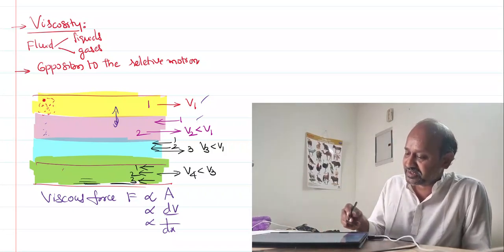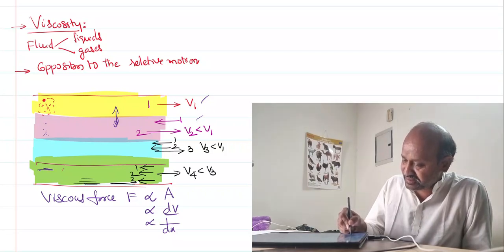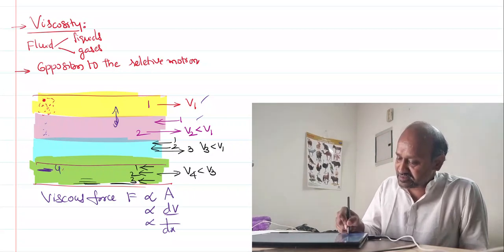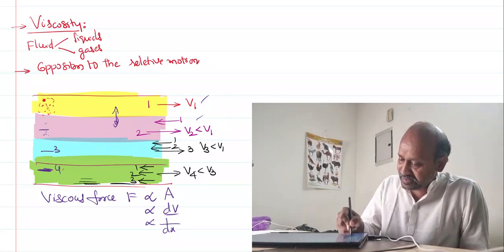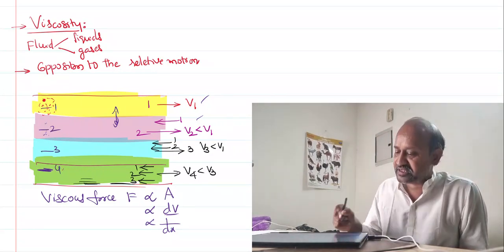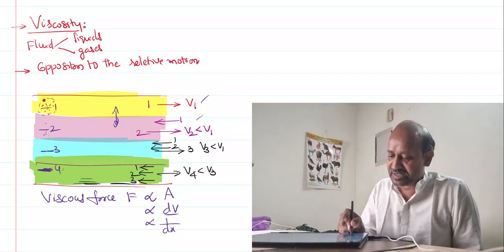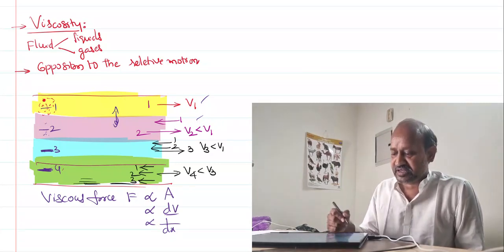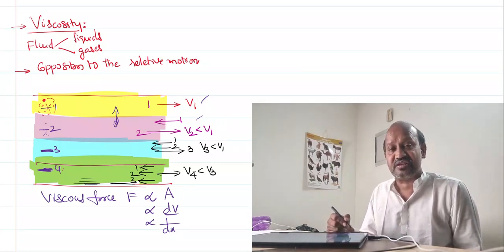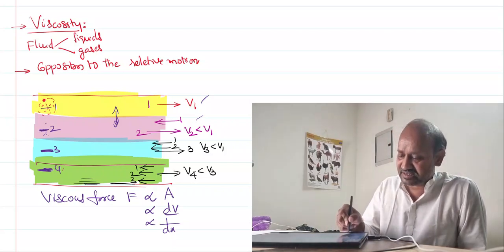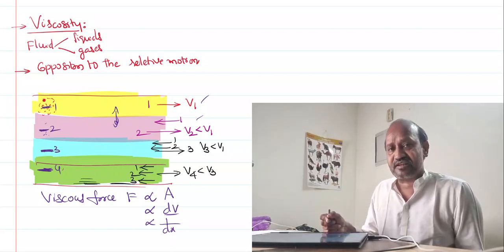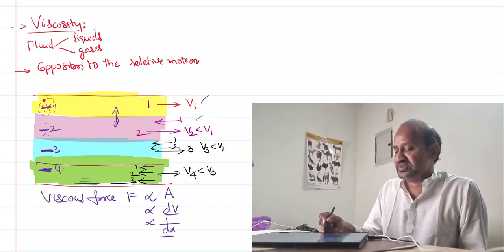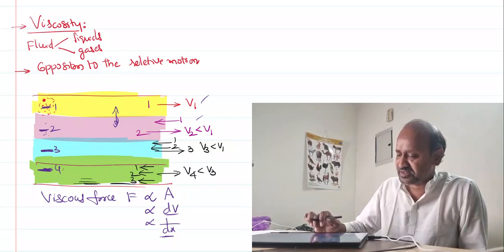On the fourth layer, there is influence from the third layer, second layer, and first layer. But the highest influence on the fourth layer is from the third layer because it is the neighbor. The force of opposition due to the third layer is more, due to the second layer a little less, and the influence of the first layer on the fourth layer is very, very less. More the distance, less the influence. These are the factors on which viscous force depends. Viscous force can be treated like a frictional force.